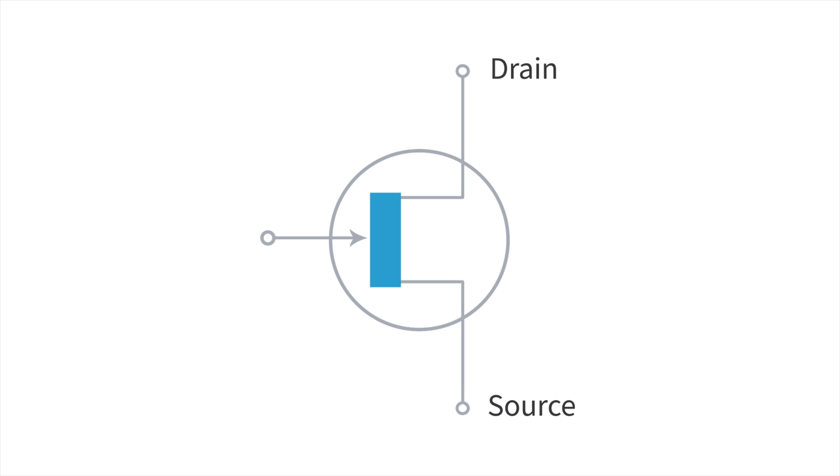If we look at a generic symbol for FETs, you can see the current flow happens between two terminals on the device, the source and the drain. The current flow is controlled by applying a voltage at the third terminal, the gate.